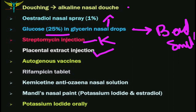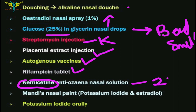Placental extract injection is given submucosally in the nose. Autogenous vaccines are of some use. Rifampicin tablets are used in cases of tuberculosis. The most commonly used solution is the Kemicitine anti-ozena nasal solution, a local antibiotic spray used by spraying or painting in the nose to eliminate secondary infection. Its components are chloromycetin (chloramphenicol), estradiol, and vitamin D2. Maln's nasal paint and potassium iodide given orally are additional options.